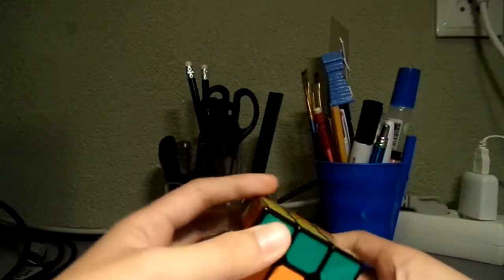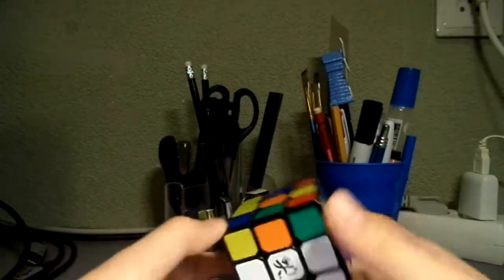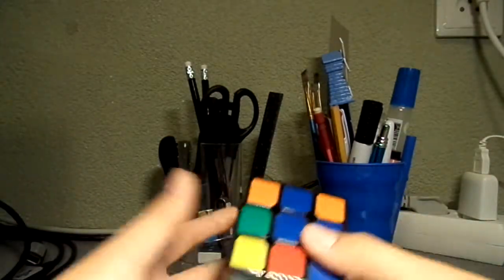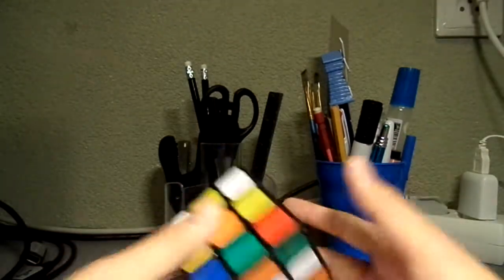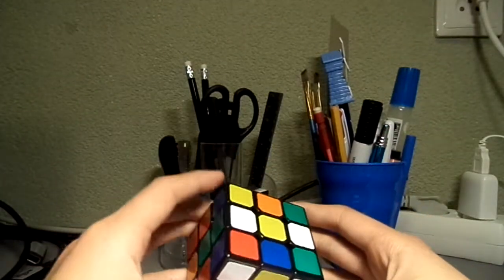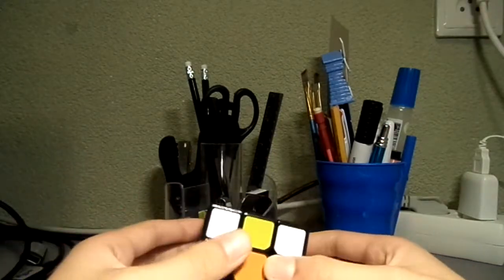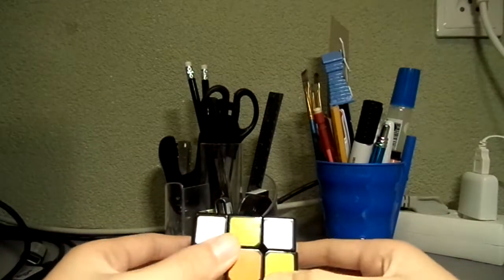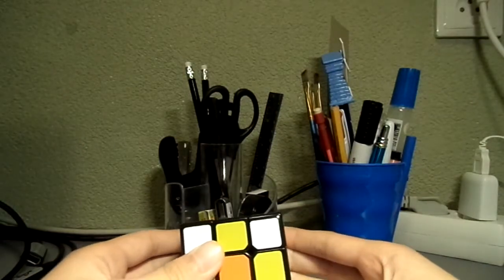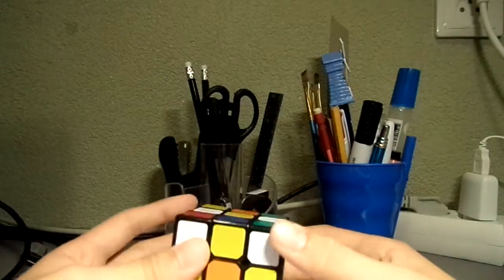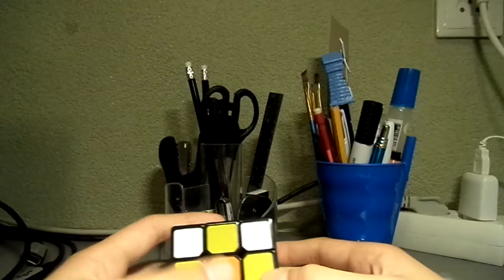But let's have this scrambled. Okay, now in the beginning of the beginners method, or the CFOP method, you need to make a cross. And a tip, this is a beginners way to do it, so I don't expect you guys, you professionals, to watch this. But if you are watching it, just keep on watching it, because maybe you can find something good in it.